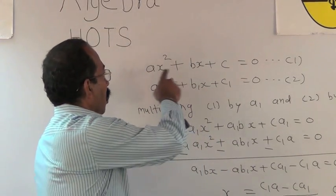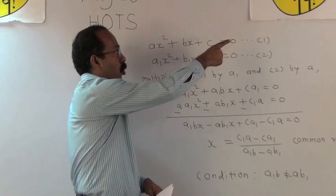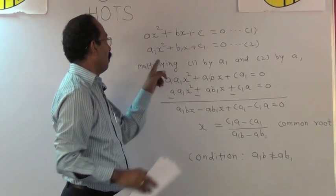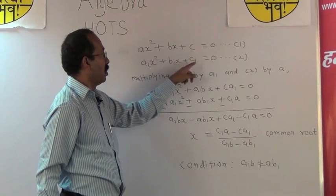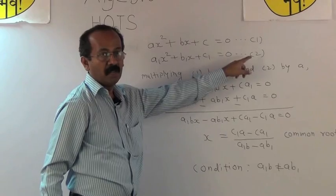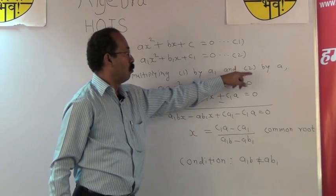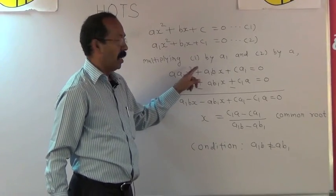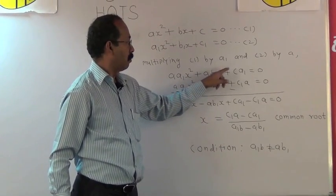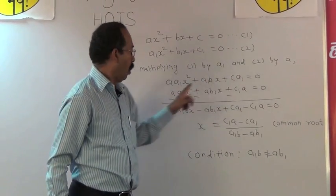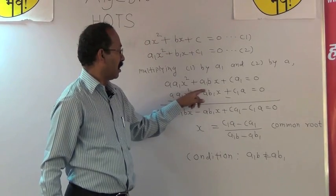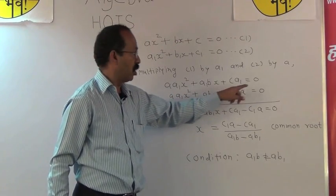So ax² + bx + c = 0 is equation 1, and a₁x² + b₁x + c₁ = 0 is equation 2. Multiplying equation 1 by a₁ and equation 2 by a, we get aa₁x² + a₁bx + c₁a = 0 and aa₁x² + ab₁x + c₁a = 0.